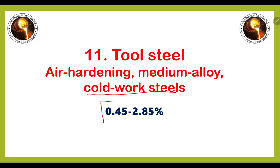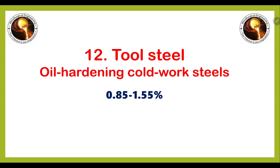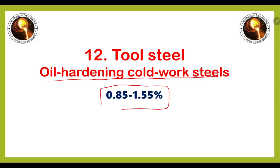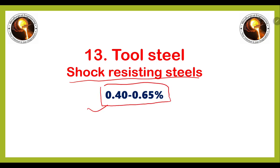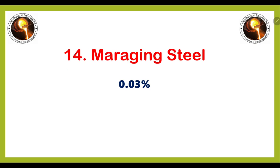Next on the list is air hardening medium alloy cold work steel, in which the carbon percentage varies from 0.45 to 2.85 percent. The next type is oil hardening cold work steel, in which the carbon percentage varies from 0.85 to 1.55 percent. Another type of tool steel is shock resisting steel, in which the carbon percentage ranges from 0.40 to 0.65 percent.